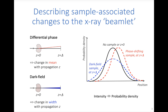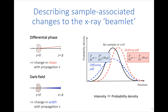We can describe changes to this probability density function as drift for the phase change and diffusion for the dark field. Both can be described quantitatively with equations for the change in the probability function. A key property of both equations is that they conserve energy or X-ray flux — just as the area under a probability density function is always one, neither equation changes the total intensity unless attenuation is present.